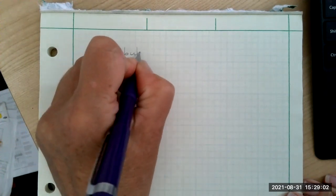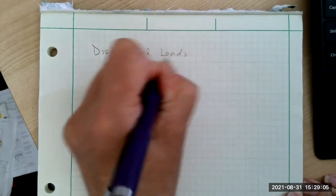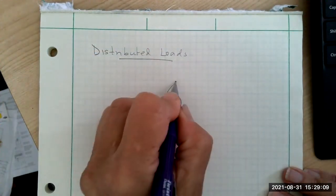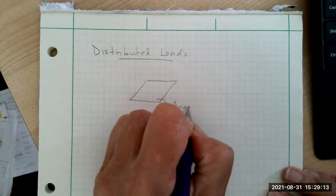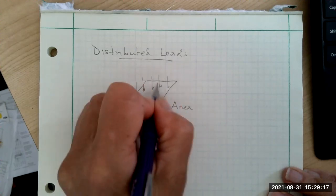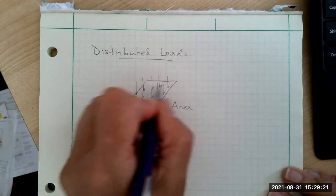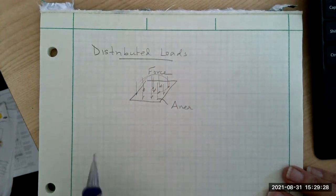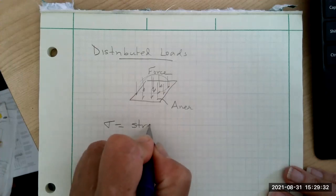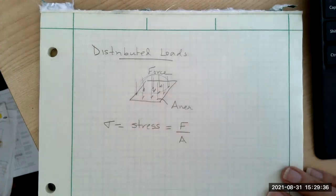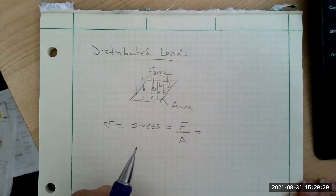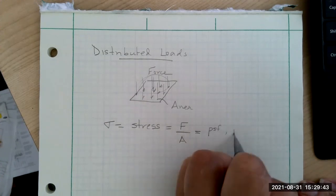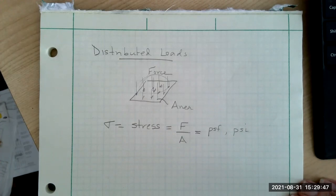Next type of forces are called distributed loads. And those of you who came from materials, you might have had some kind of area, and you had a force distributed over that area. What you may have learned in materials is that this is called stress. Stress is the force over an area. And so the units, an example of the units, would be pounds per square foot, could be pounds per square inch, or Newton per meter squared.